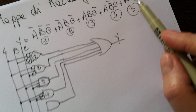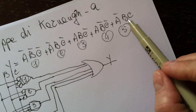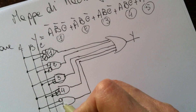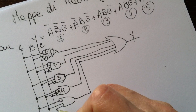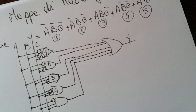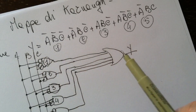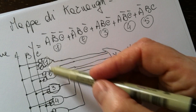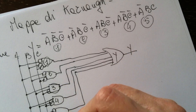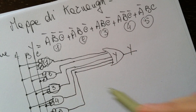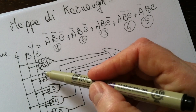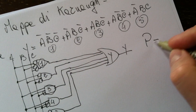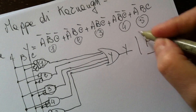Then we have NOT A, B, and C going directly in for the fifth AND port. So we needed a total of one NOR port plus five AND ports, and then the other input ports, for a total of 15 ports to realize this circuit.